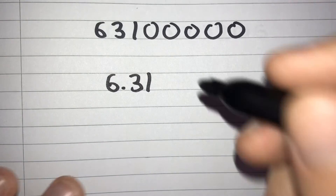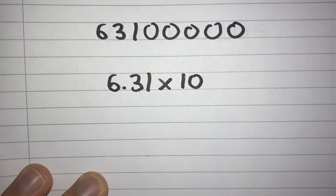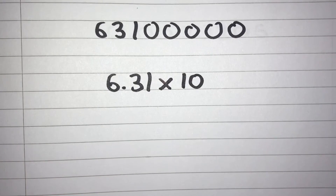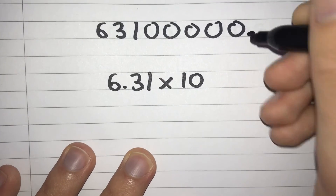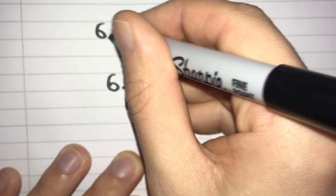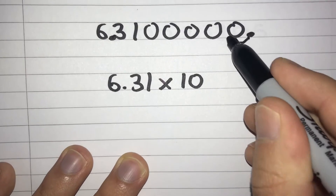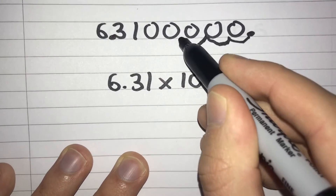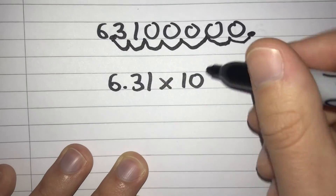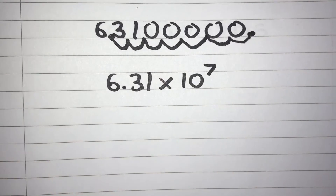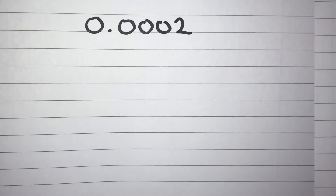It's going to be 6.31 multiplied by 10 to the power of something. We get that power by looking at how many spaces our decimal point has moved from its original position at the end to where it is now just after the 6. Counting: 1, 2, 3, 4, 5, 6, 7 spaces. So our power is 7 and our answer would be 6.31 times 10 to the power of 7.